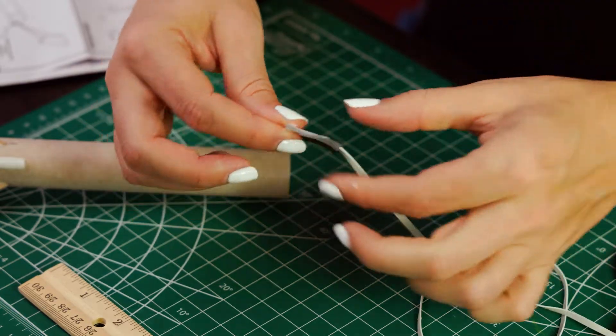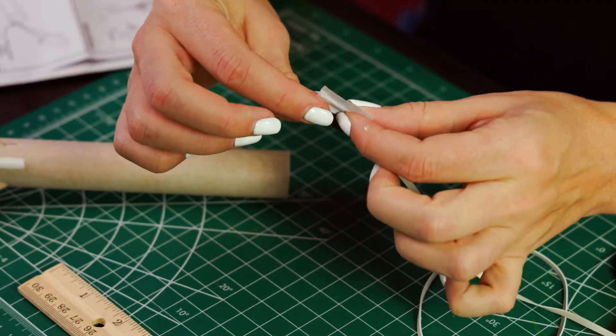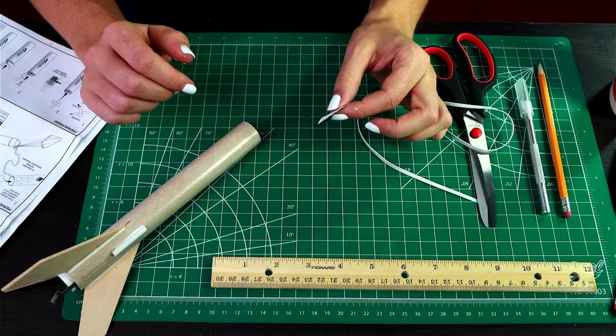And as you're holding this waiting for it to set, it helps if you round it a little bit since it's now going to sit inside of a round body tube.